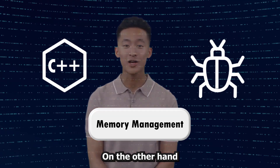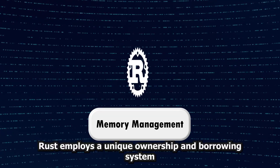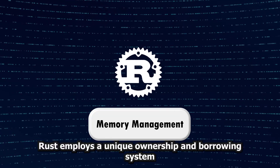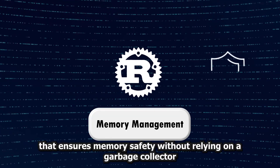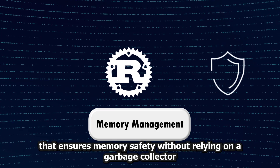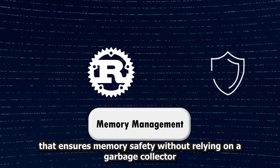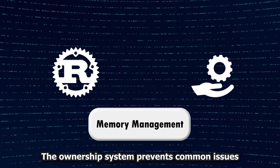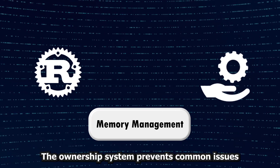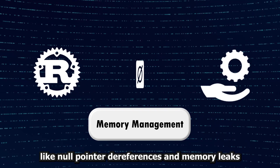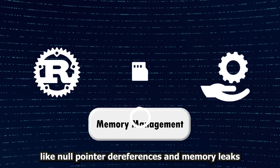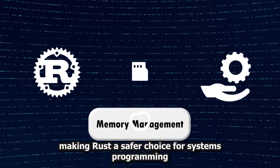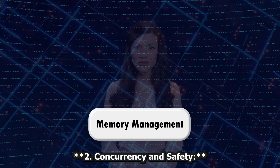On the other hand, Rust employs a unique ownership and borrowing system that ensures memory safety without relying on a garbage collector. The ownership system prevents common issues like null pointer dereferences and memory leaks, making Rust a safer choice for systems programming.